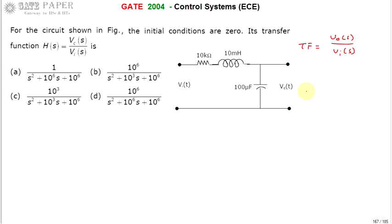In the S-domain, the impedance of the capacitor is 1/sC, the impedance of the inductor is sL, and the resistance is simply R — it is independent of frequency. R is independent of frequency whereas L and C are frequency-dependent. As frequency Omega changes, that is as s changes, their reactances change. Now we can write V_out(s) divided by V_in(s).